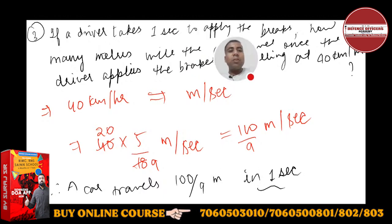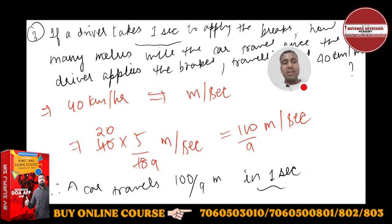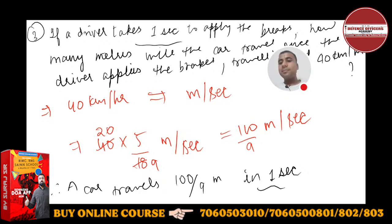One second से क्यों निकाला? क्योंकि driver को एक second लगता है। Suppose अगर two seconds पूछा होता तो into 2 कर लेते — 200 upon 9 meter। Three seconds पूछा होता तो into 3 कर लेते। Okay, very easy.